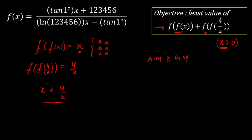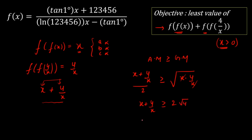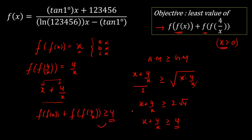It is clearly visible that we need to apply the AM-GM inequality here. The arithmetic mean of x and 4/x is (x + 4/x)/2, and the geometric mean is √(x · 4/x) = √4 = 2. Since AM ≥ GM, we get (x + 4/x)/2 ≥ 2, so x + 4/x ≥ 4. Therefore, the least value of f(f(x)) + f(f(4/x)) is 4, and that is our final answer.